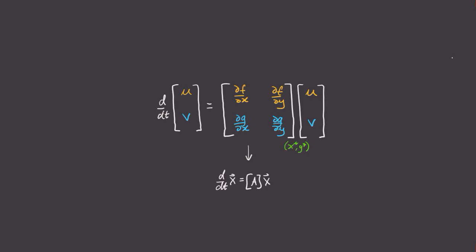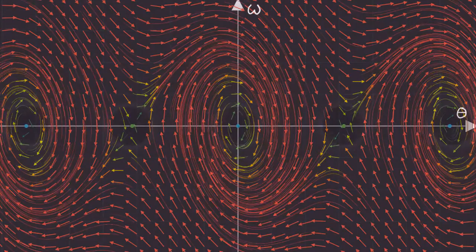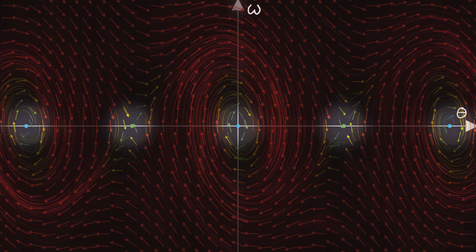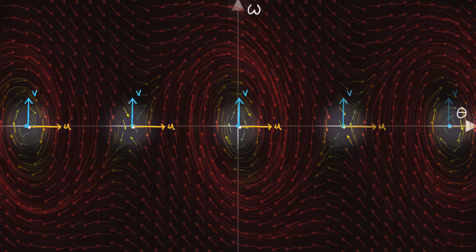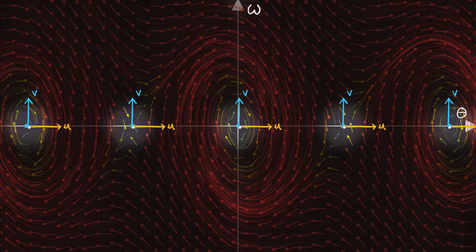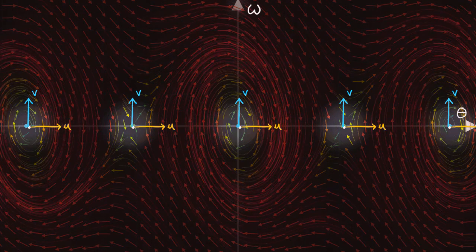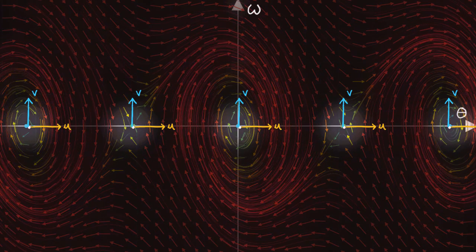But for now, let me tell you some key limitations of linearization theory. Firstly, linearization can only ever illuminate the dynamics near the fixed points. In other words, where u and v are close to zero. Otherwise, the higher order terms that we truncated earlier become too large to neglect.